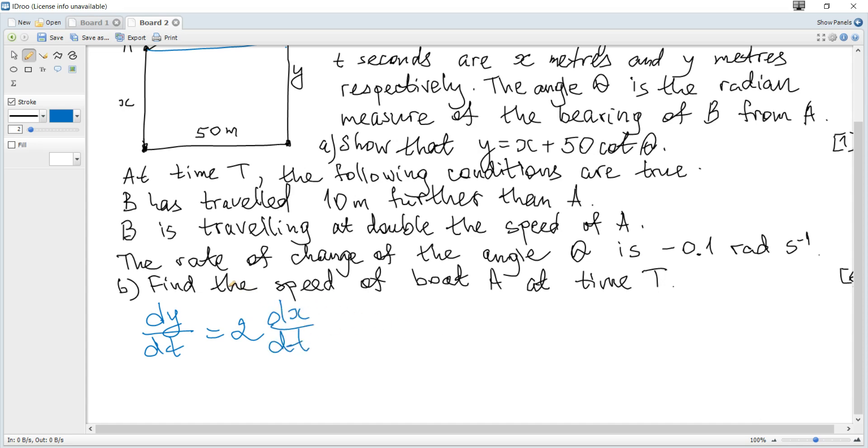And the rate of change of the angle theta is negative 0.1. Find the speed of boat A at time T.